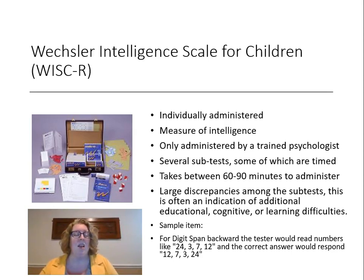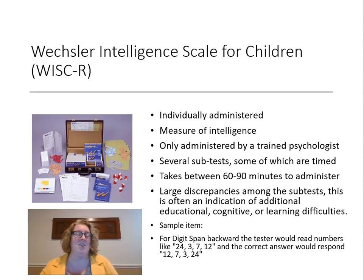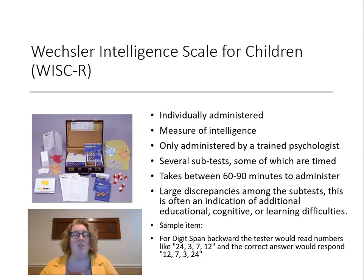All of the WISC subtests are theorized to measure intelligence. If we see large discrepancies between subtests — more than a standard deviation — we might consider additional educational, cognitive, or learning disabilities. For example, lower scores on timed subtests might suggest a processing disorder or ADHD, and problems with working memory can indicate a learning disability. A sample item from the digit span task: the examiner reads numbers like 2, 4, 3, 7, 12 and the student responds backwards — 12, 7, 3, 4, 2 — measuring working memory.